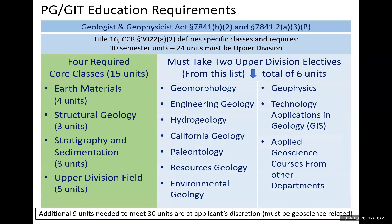Here are the education requirements. The four required core classes — shown in green — are: earth materials, which is essentially mineralogy or petrology, requiring four units; structural geology; stratigraphy and sedimentation; and then upper division field. Upper division field and structural geology are the two I see missing most often, and folks have to go back and find a course at a university. Then you take two applied courses — most often I see engineering geology or hydrogeology, but any of those will count. That gets you to where you only need another nine units, and it's kind of up to your discretion which courses you want to count.